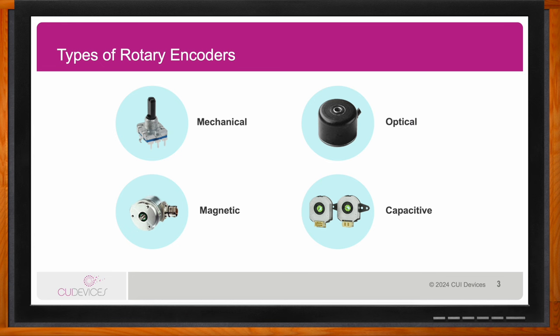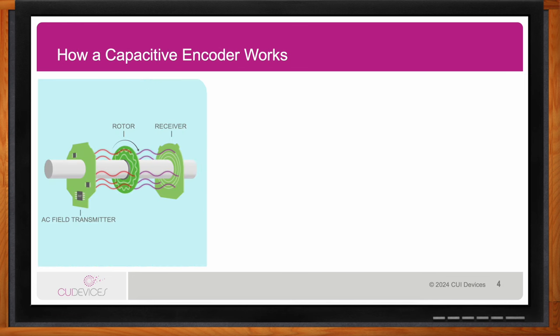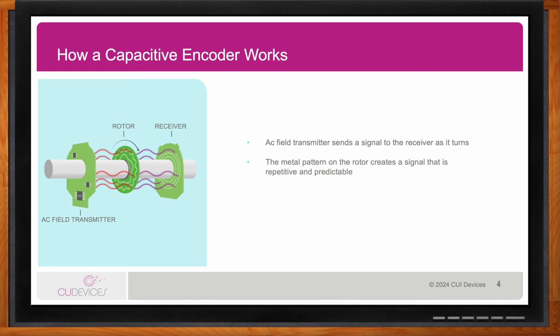Can you explain how capacitive encoders work? A capacitive encoder has three PCBs inside. From a high level, one board is a transmitter board that transmits a signal. Then there's a rotor board attached to the rotating shaft, which has two sinusoidal patterns on it. That sinusoidal pattern interrupts the signal going from the transmitter board to the receiver board. The receiver board picks up that modulated signal and sends it back to the transmitter board, which has an ASIC that takes that data and turns it into whatever output is necessary. That's how rotary motion is captured — using the capacitance between those two boards and how it changes as the rotor rotates.